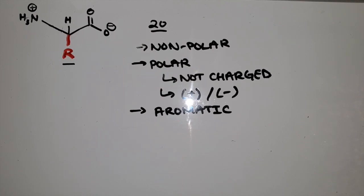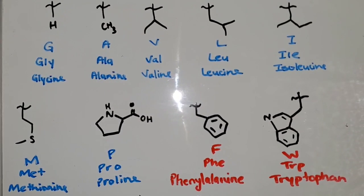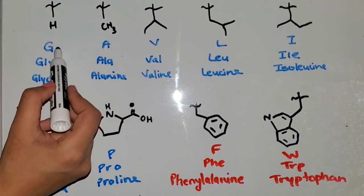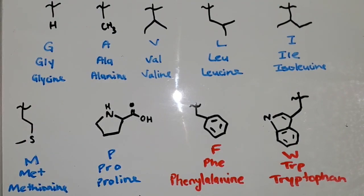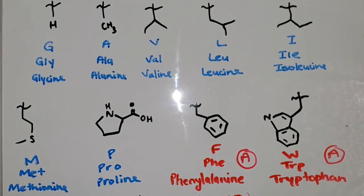Now that we've gone over non-polar, polar, charged, not charged, and aromatic, it's time to see the 20 different R groups. Here is a list of all of the non-polar amino acids. For each amino acid I have the structure, the one-letter code, the three-letter code, and the name. For non-polar, there are nine amino acids. Out of the nine, two written in red are actually aromatic and the other seven are not.